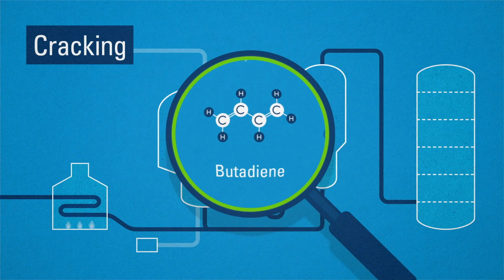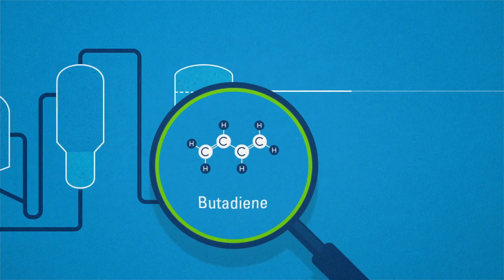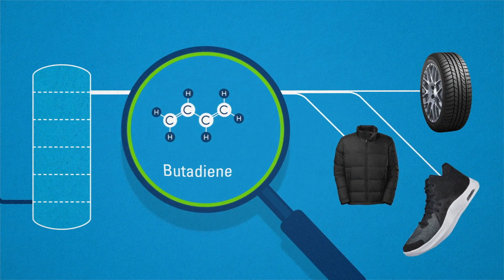Butadiene is highly sought after. It is primarily used to make synthetic rubber. This is needed for car tires, for example, or as synthetic fibers in clothing and footwear.